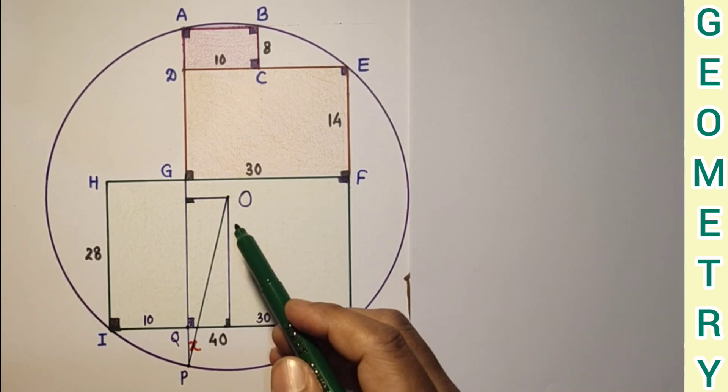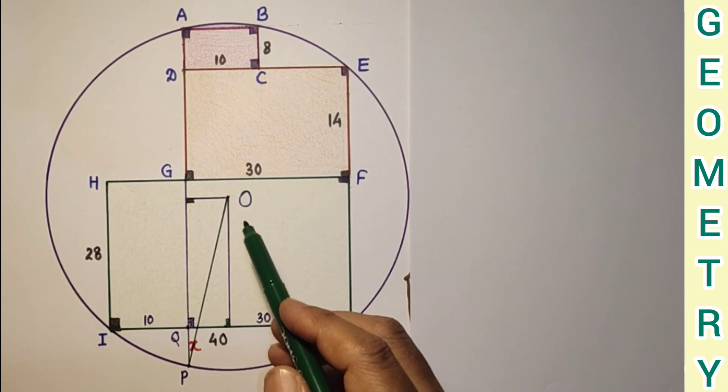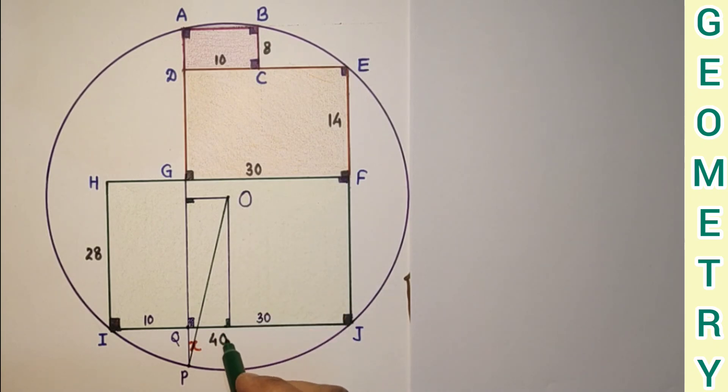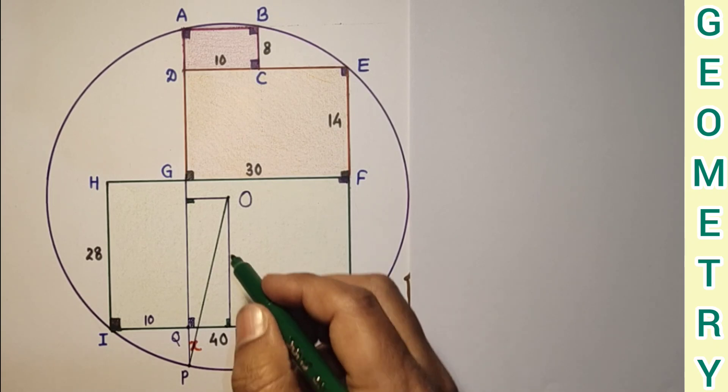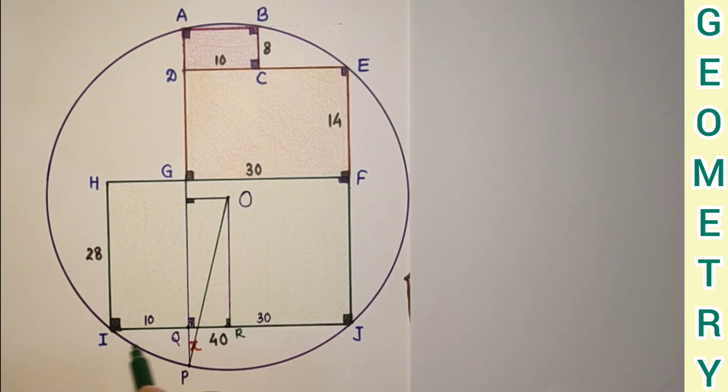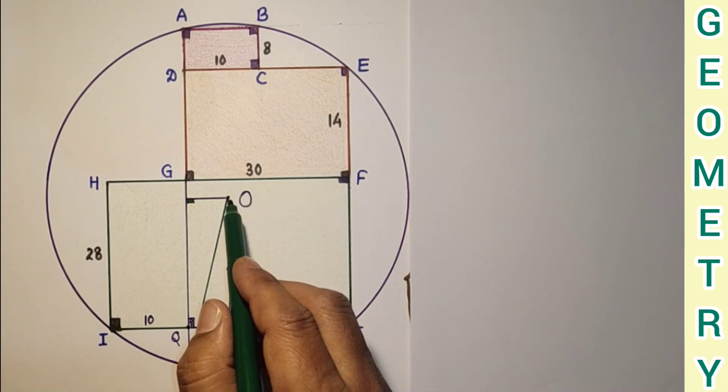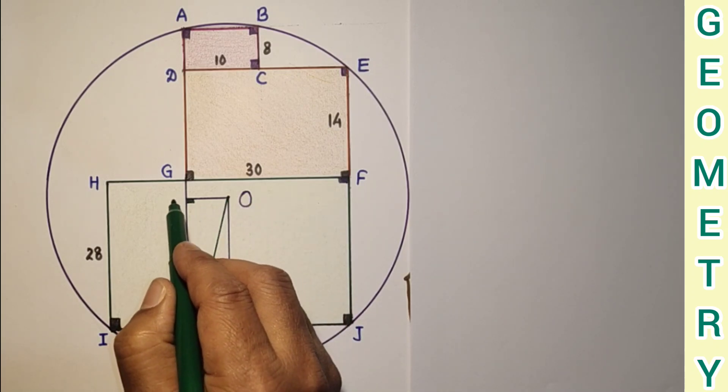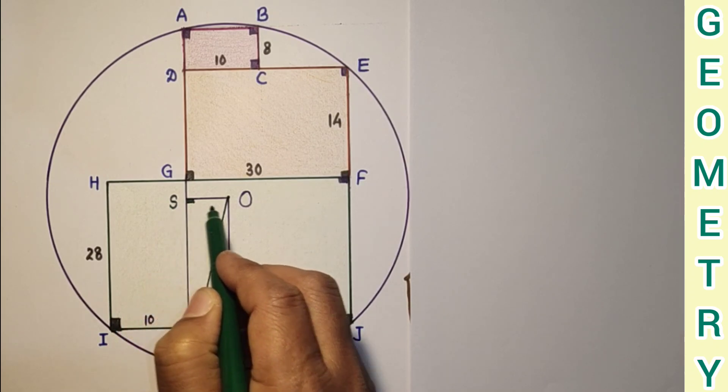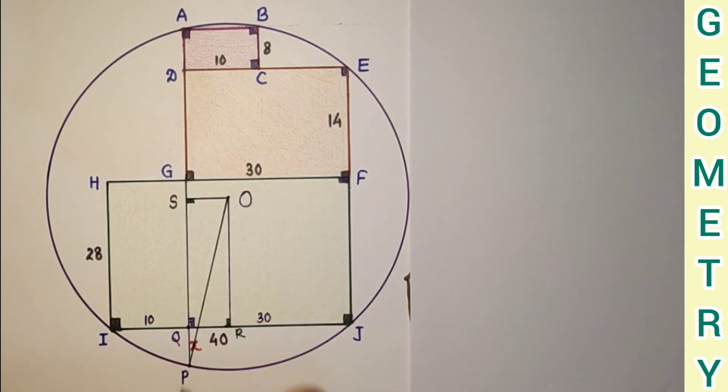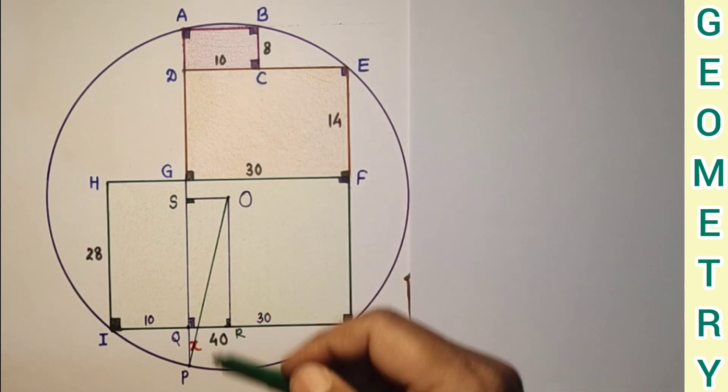So I have done three constructions. O to this point, let us suppose this is R. This point is R. OR drawn perpendicular to this chord IJ, and this is done OS. Let us suppose this point is S. OS is drawn perpendicular to the AP chord.